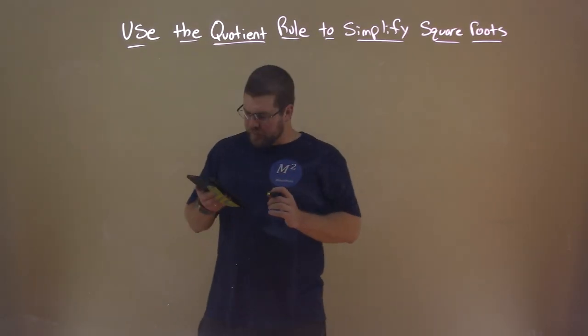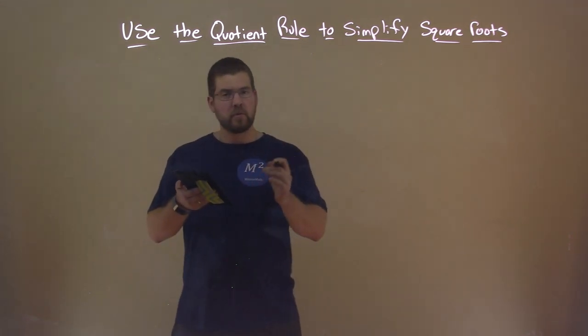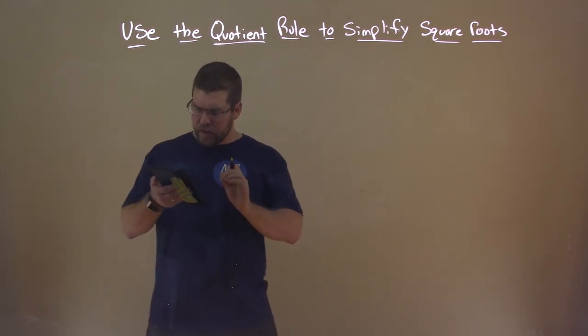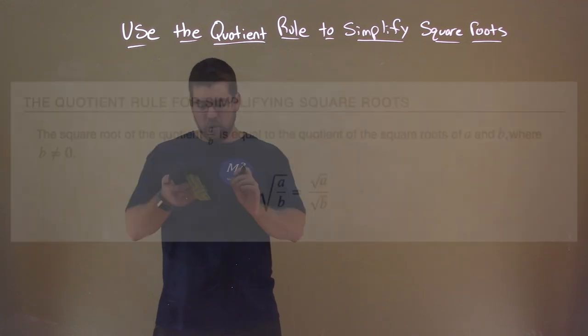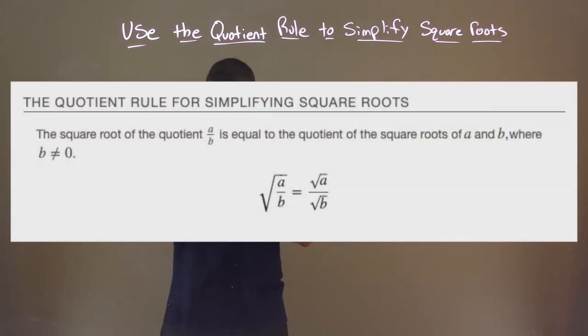So what is this Quotient Rule? The Quotient Rule for simplifying square roots is as follows. The square root of the quotient A over B is equal to the quotient of the square roots of A and B, where B is not equal to zero.